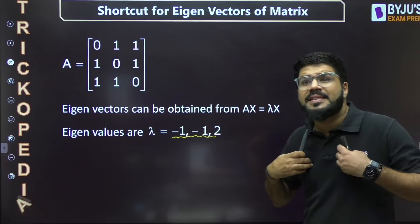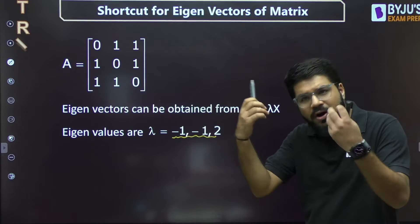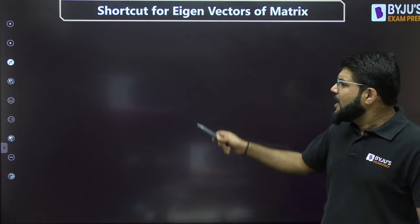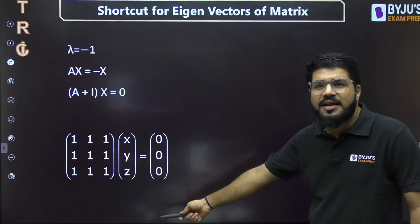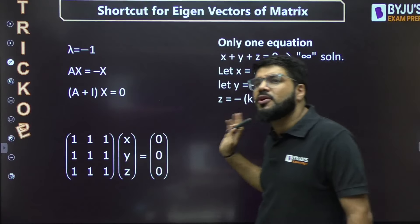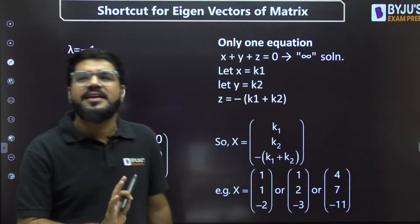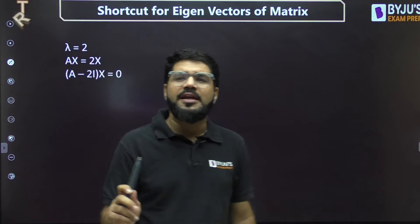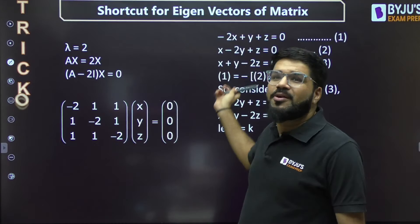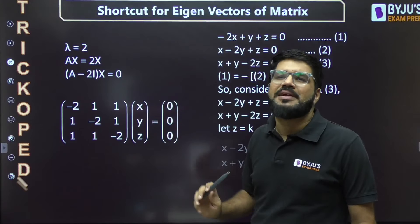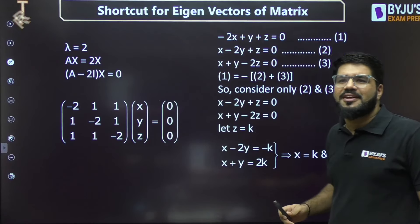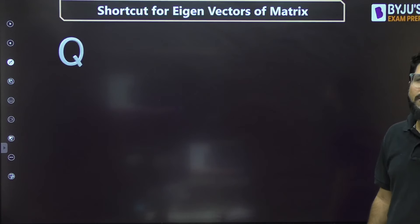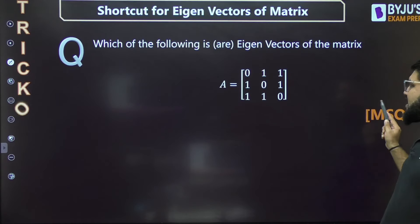But the method I'm going to tell you will not even require the calculation of λ. The conventional method requires finding λ first, then for every λ you have to make equations and solve them. This is only for your reference, not compulsory. For λ = -1, what are the eigenvectors? Similarly for λ = 2. It requires equation solving and can be time-consuming.